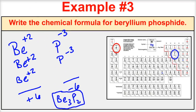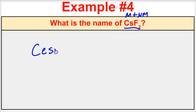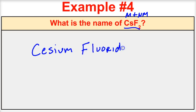Let's take a look at another example where we're asked to name a compound. We can see cesium comes from group 1 on the periodic table and it's bonded to a nonmetal, so we know this is a type 1 binary ionic compound. When we name this, it's simply cesium fluoride.